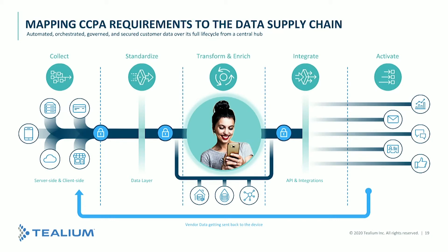The second step is standardizing data in a common language so it can be used, transformed, and enriched in the third step. From the legal perspective, it was always difficult to explain what kind of data is being tracked from different sources. These two steps provide exactly that solution — what are we collecting, translated into a common data language. This helps you communicate with legal teams and marketing and provide clear information about what's actually happening.